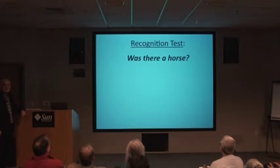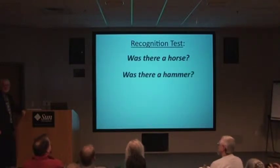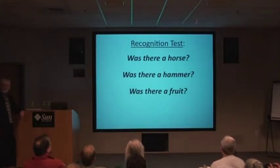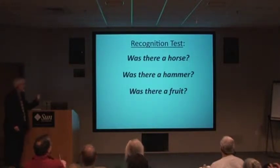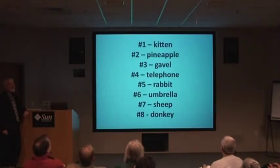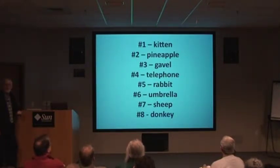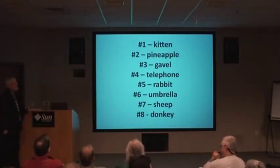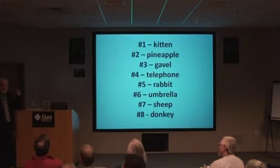Was there a horse? A hammer? Was there a fruit — a pineapple? Was there a kitten? Here are the actual answers: there was a gavel. An audience member noted that the sound of the clicker helped shift their attention to the flashed image. Another version of the umbrella video had a beep with each pass completed, which would have changed the task entirely — so I muted the sound.